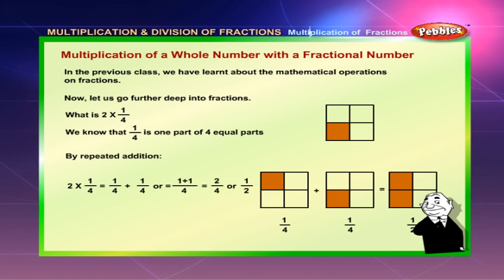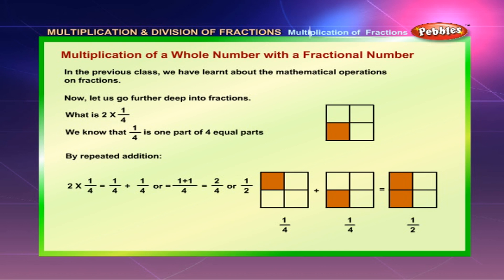What is 2 into 1 by 4? We know that 1 by 4 is 1 part of 4 equal parts. By repeated addition, 2 into 1 by 4 is equal to 1 by 4 plus 1 by 4, which equals 1 plus 1 by 4, which is equal to 2 by 4 or 1 by 2.